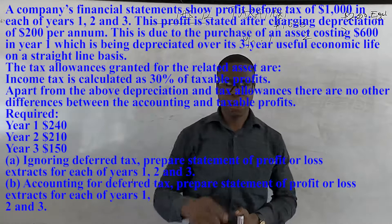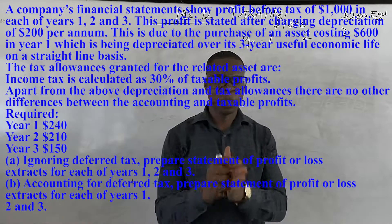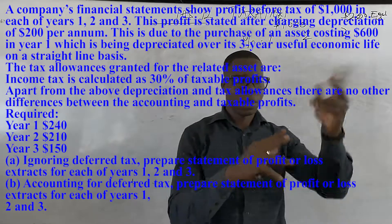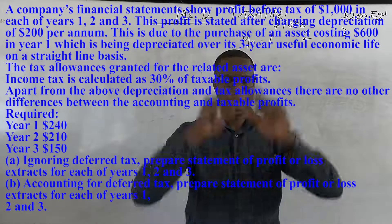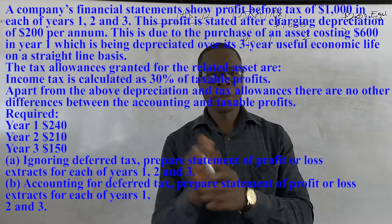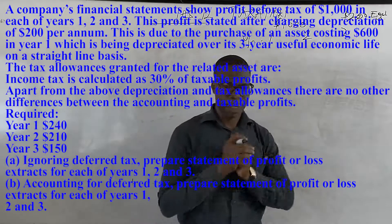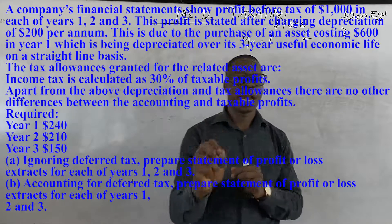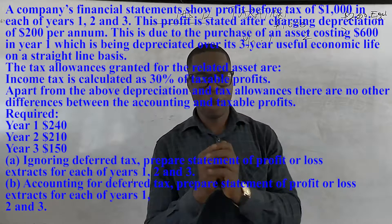We were also told that the tax authorities provided capital allowances. This is where the issue comes — the entity has already deducted depreciation from gross profit to arrive at accounting profit, but according to tax law that is not what they are supposed to deduct. The tax authorities have provided the allowances: year one is $240, year two is $210, and year three is $150. The first scenario asks us to ignore deferred tax and calculate the tax charge in the P&L account.